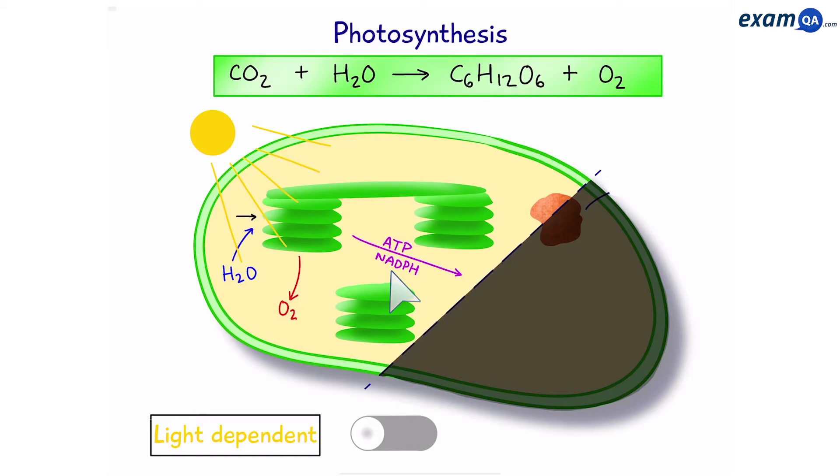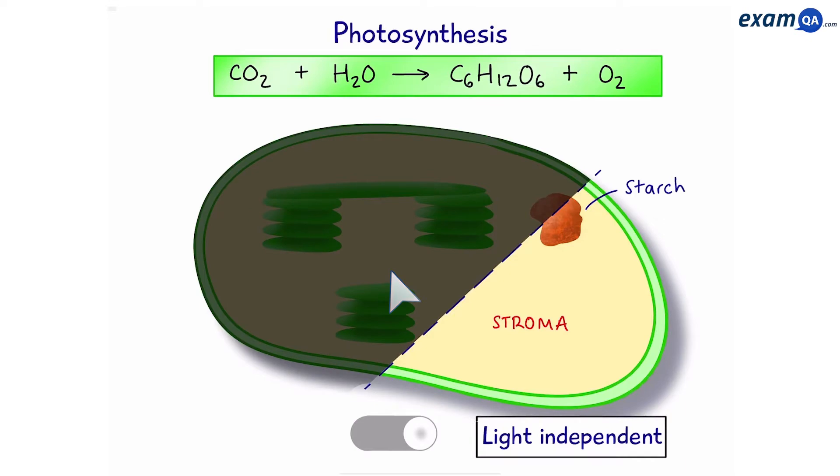NADPH is a coenzyme and we'll talk more about this later. Then, the next stage is known as the light-independent stage, also known as the Calvin cycle. It happens in the stroma, which is the jelly bit in the middle of the chloroplast. Here we have a cycle in which carbon dioxide enters and mixes with ATP and NADPH to create glucose and other sugars. And these get stored in the chloroplast.